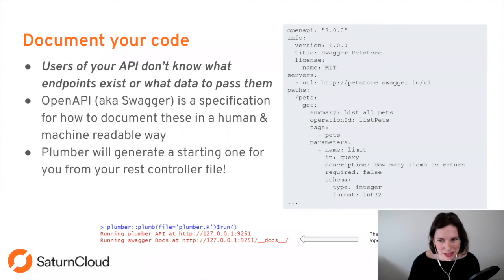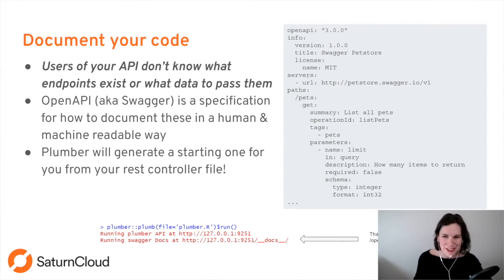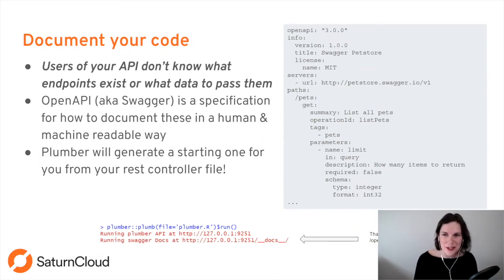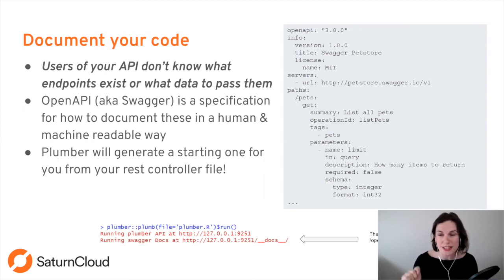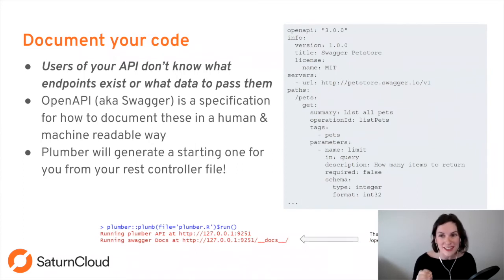The next thing you want is to document your code — but not just for people editing the code. People calling your API need to know exactly what to send you and exactly what to get back. Engineers need very specific information: is age an integer or a decimal? There is a standard format for this called an OpenAPI doc, also known as a Swagger doc. These documents specify things like endpoints, accepted parameters, and response formats, and both humans and machines can process them.